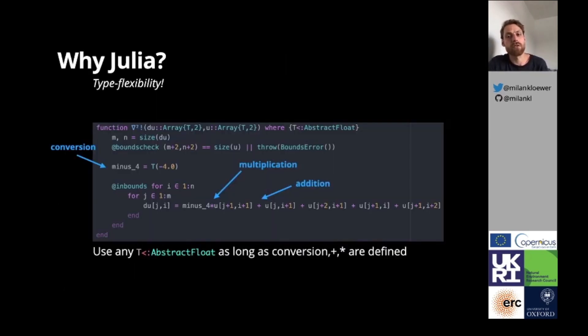Why do I use Julia for research with reduced-precision number formats? The answer is type flexibility. Thanks to zero-cost abstractions, we can write functions in Julia such that they get compiled to any number format T on the fly.